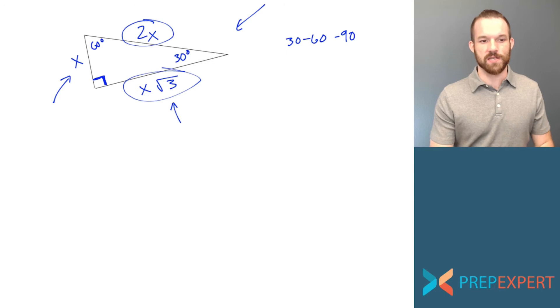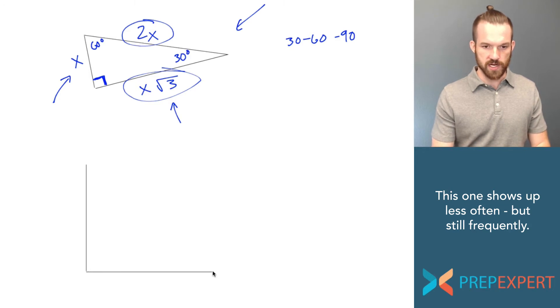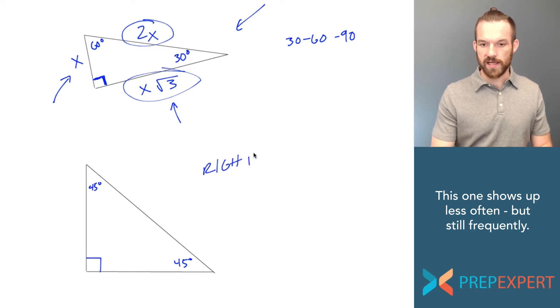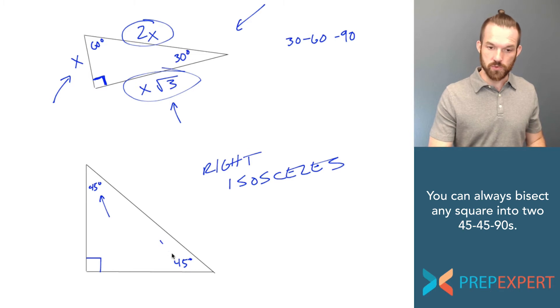The other type of special triangle we need to be familiar with is called a 45-45-90 triangle. As you can imagine, that's because it contains two 45 degree angles and a 90 degree angle. It's also the only way that you can form a right isosceles triangle. So if I know that I have a triangle that is a right triangle and is also isosceles, that means the two non-right angles must be equal to each other, which means they both must be 45 degrees.